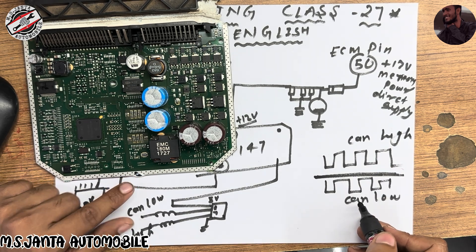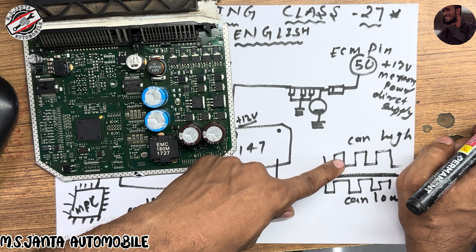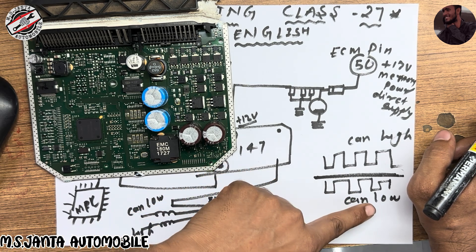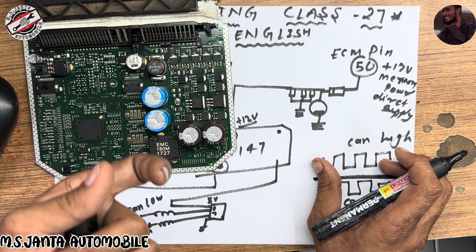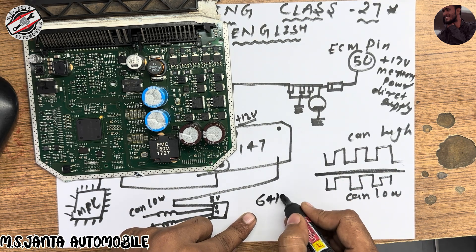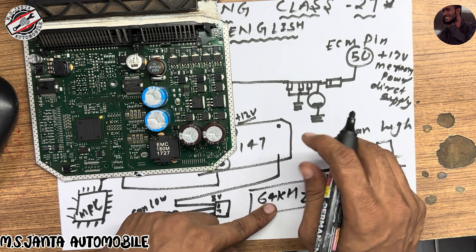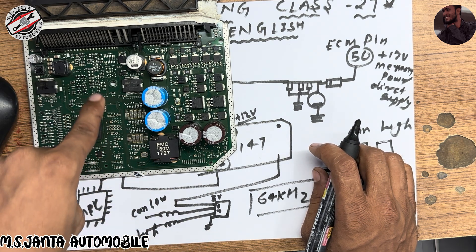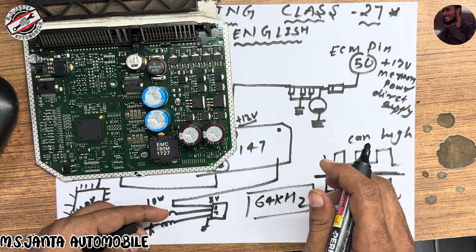CAN high shows on the upper side of the line and CAN low shows on the downside — this is called the CAN signal. If this signal does not travel, you cannot scan the vehicle. The CAN high and CAN low frequency will be 64,000 kilohertz — 64kHz. If this 64kHz is not being created by the IC, it means you have a problem in your processor or your CAN IC.